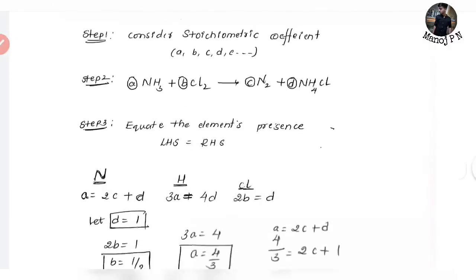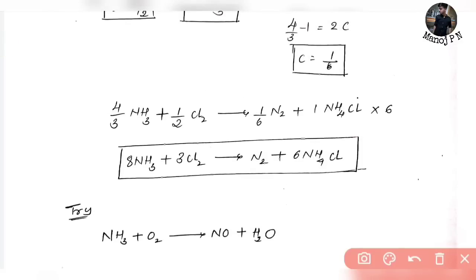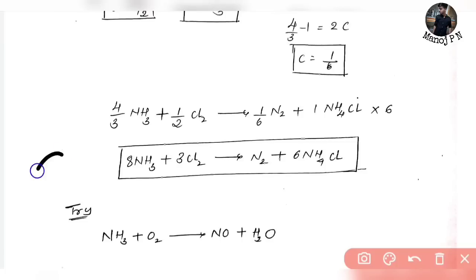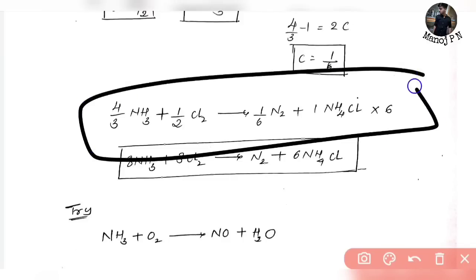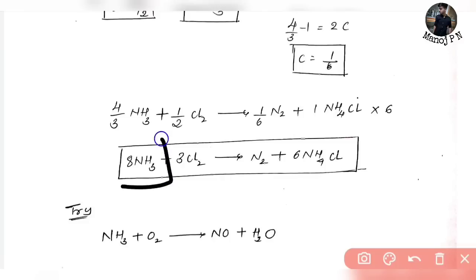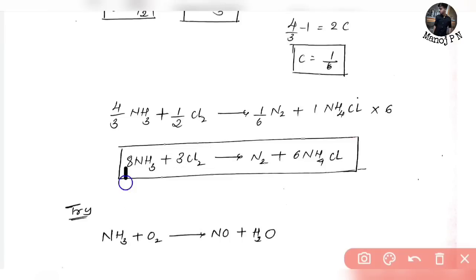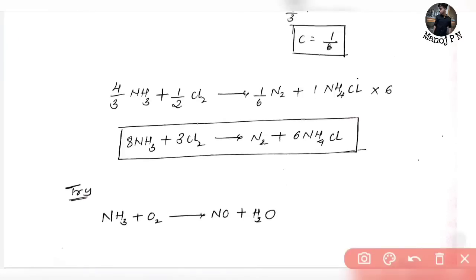So A, B, C, D balanced: A is 4 by 3, B is 1 by 2, C is 1 by 6, D is 1. So the equation is: 4/3 NH3 plus 1/2 Cl2 gives 1/6 N2 plus 1 NH4Cl. Now multiply the entire equation by 6 to get whole numbers. 6 into 4/3 is 8, 6 into 1/2 is 3, 6 into 1/6 is 1, and 6 into 1 is 6. So the balanced equation is: 8NH3 plus 3Cl2 gives N2 plus 6NH4Cl.